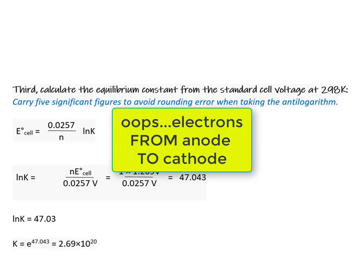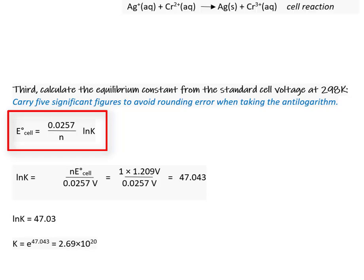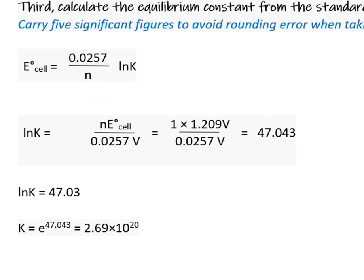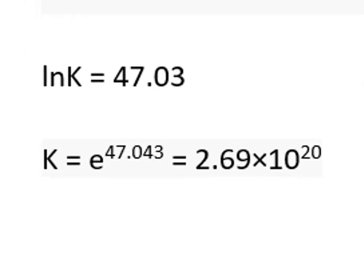The last step is to calculate the equilibrium constant using this equation: E°cell = (0.0257/n) × ln(K), where n is the number of electrons. Doing some algebraic rearrangement, we solve for ln(K). We substitute the values: n = 1, E°cell = 1.209V, and the constant 0.0257. Natural log of K is 47.03.